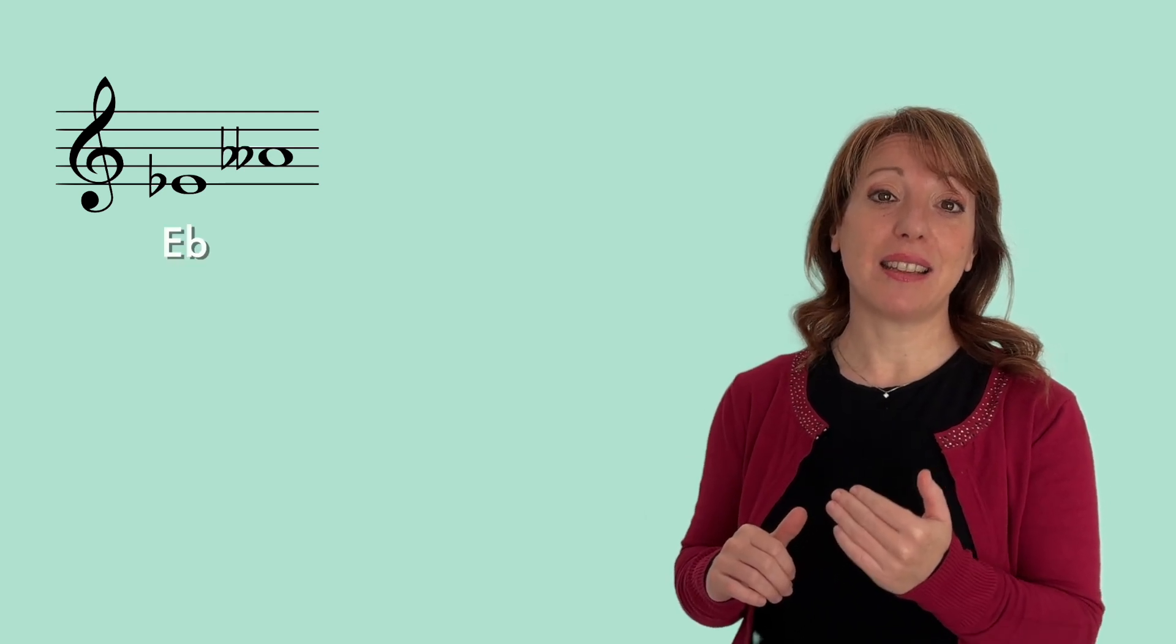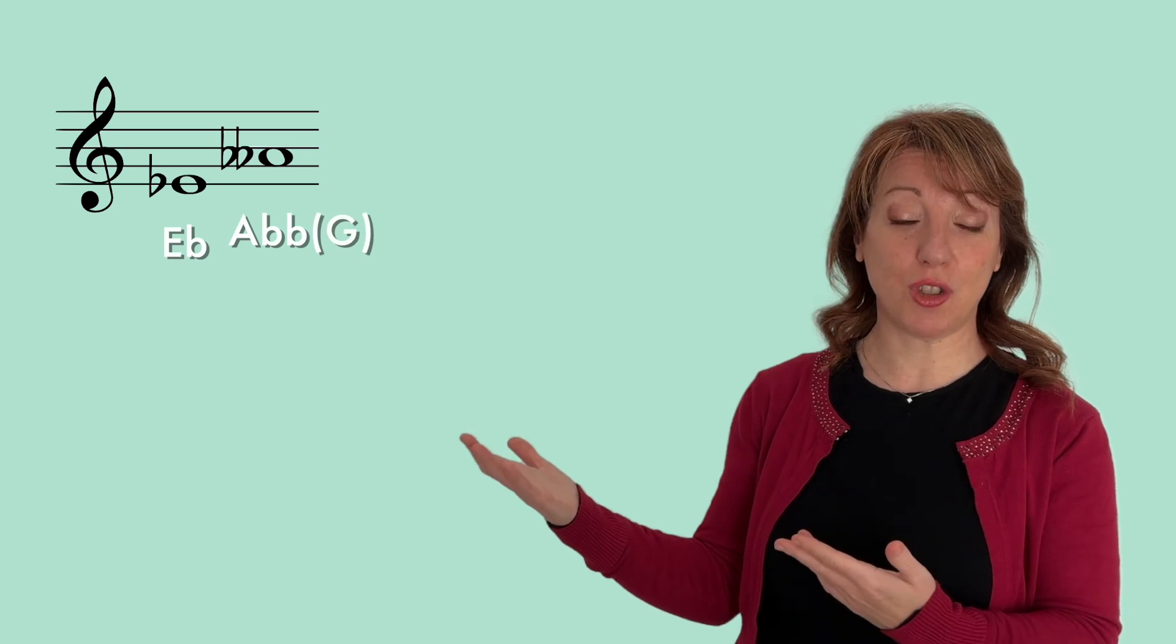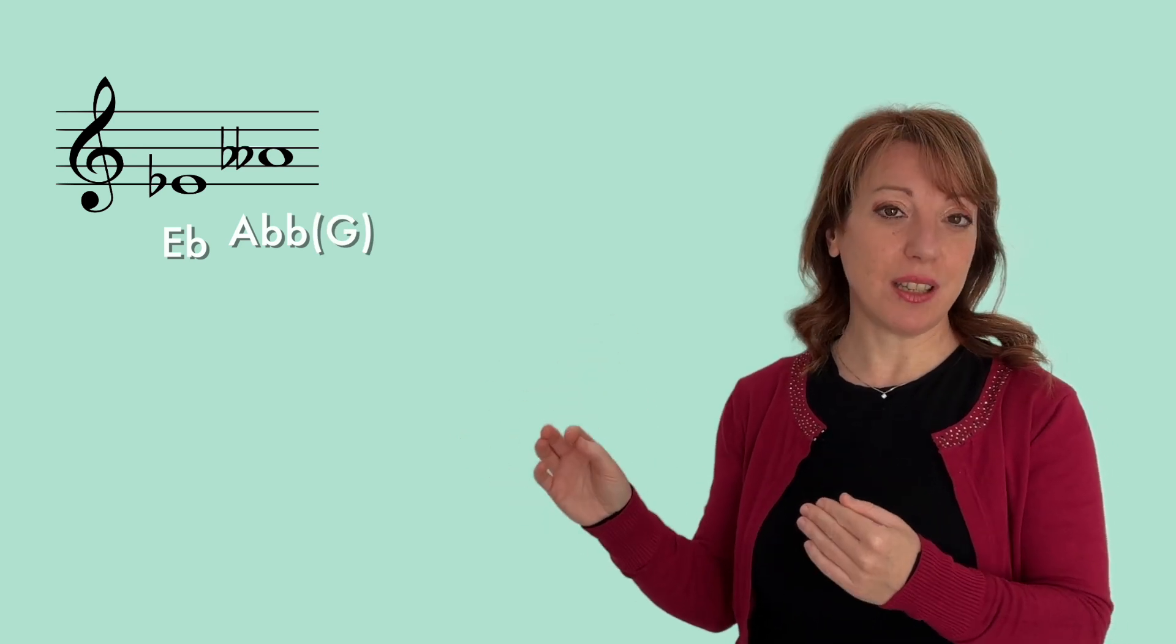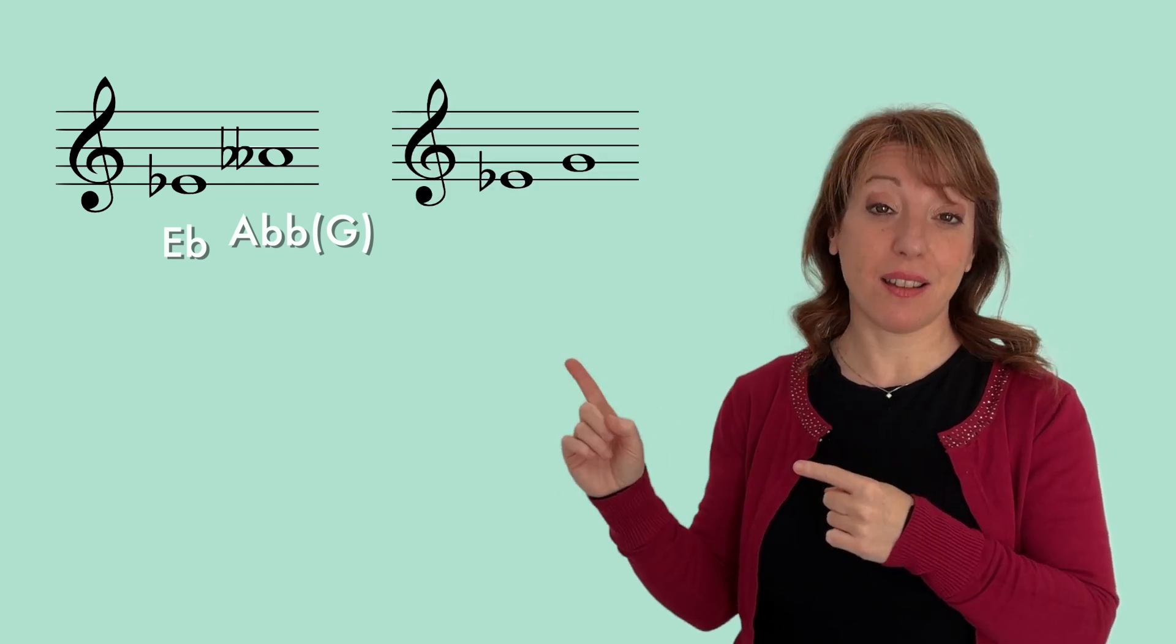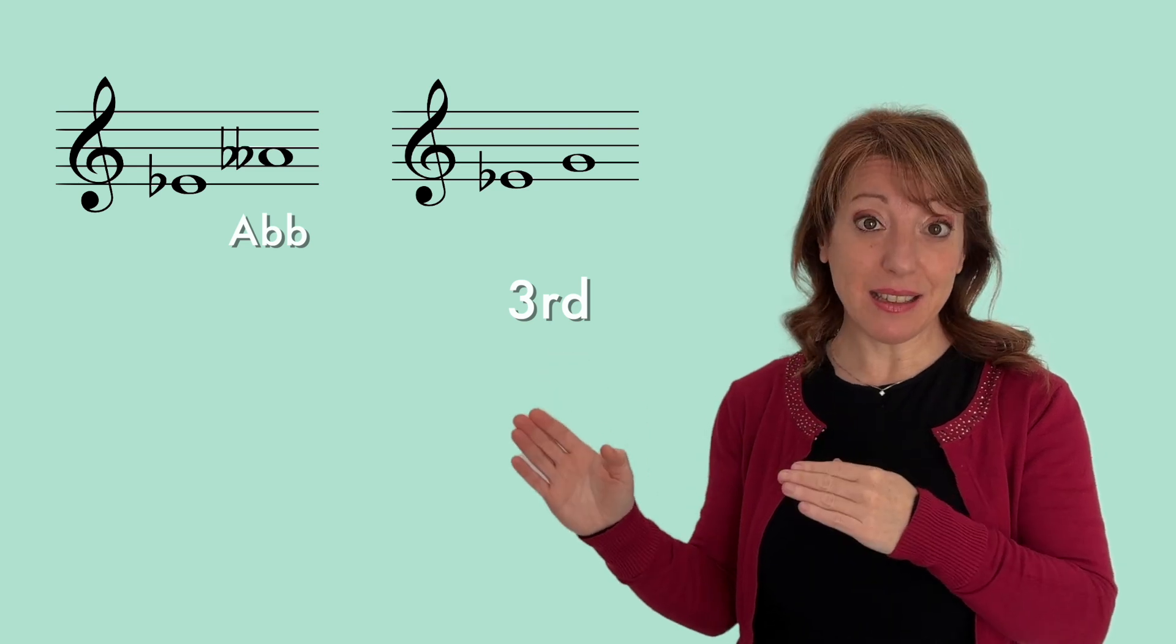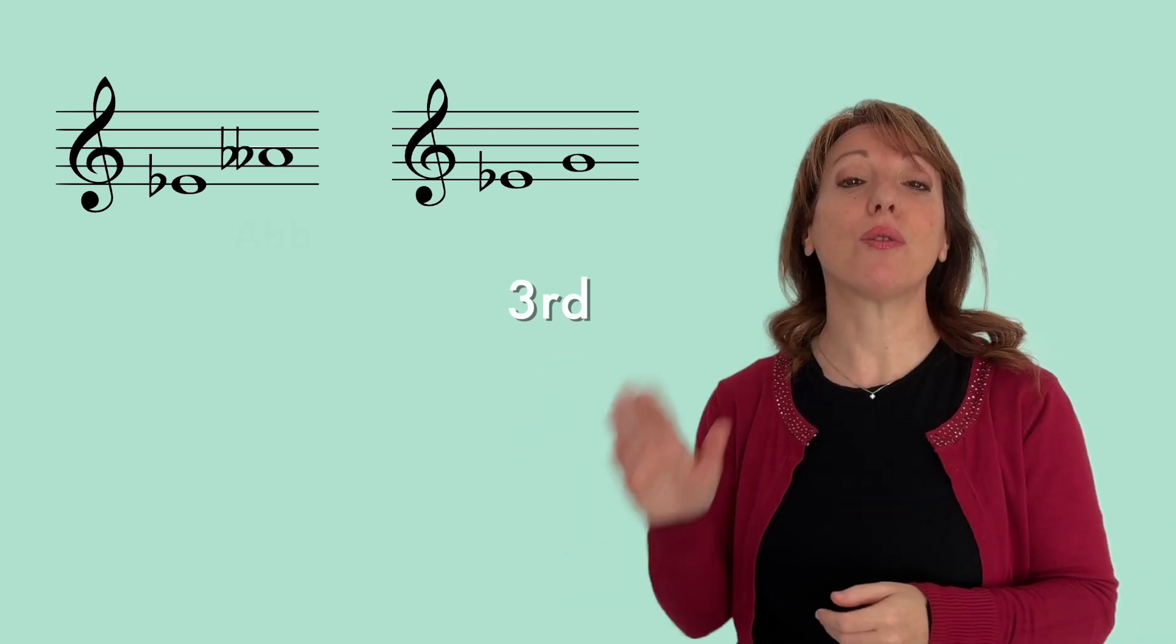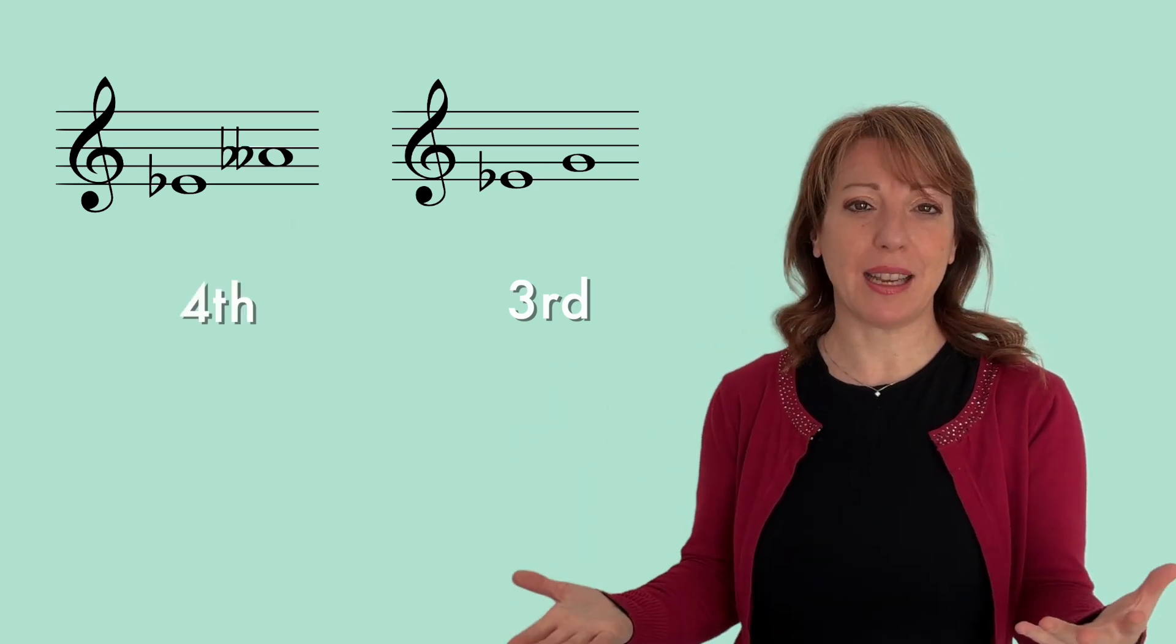And now, a question that I receive all the time. For example, look at this interval. This is E flat and A double flat, which is in fact G. Why can't we call this A double flat G instead of A double flat? If we call this note G, the interval will be of a third. If we call this note A double flat, the interval is a fourth. What does that mean?